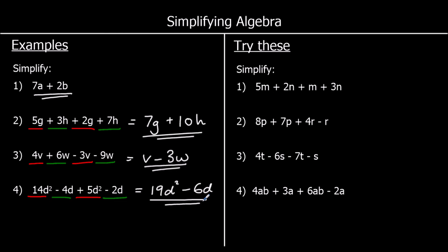OK, 4 for you to try — pause the video and give them a go. Question 1: we have m terms and n terms. For m: 5m plus 1m — m by itself means 1 of it — so 5m plus 1m is 6m. For n: 2n plus 3n is 5n.